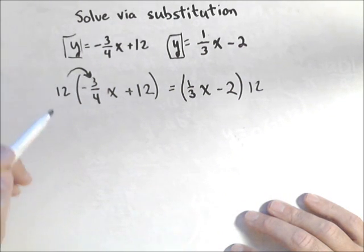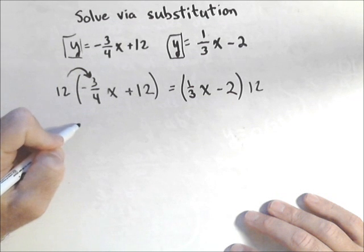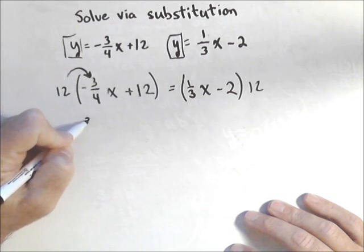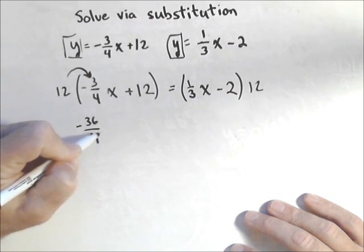Because we got to be a little careful, remember that 12 distributes to both parts. So I get minus 36 over 4x and then plus 144.